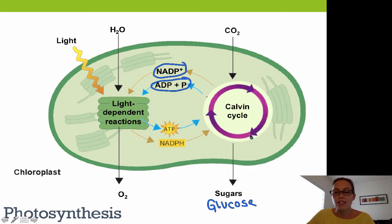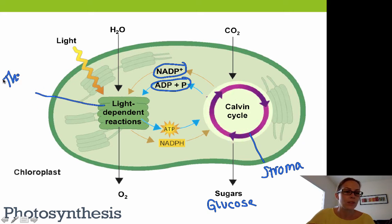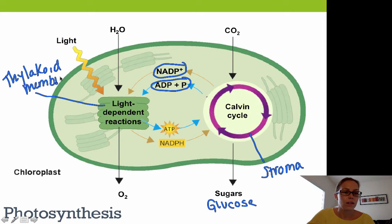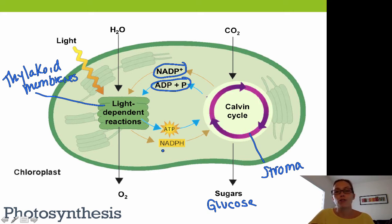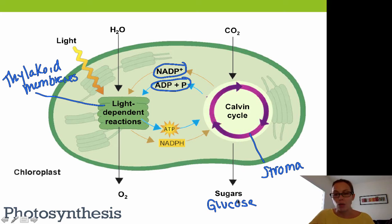Remember that the Calvin cycle takes place in the stroma of the chloroplast, and the light-dependent reactions take place in the thylakoid membranes. You need to know what goes into and comes out of both the light-dependent reactions and the Calvin cycle.